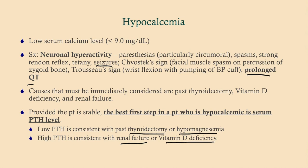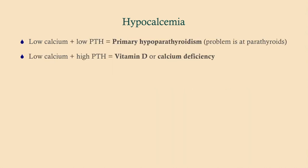Remember that PTH takes 25-hydroxyvitamin D and converts it to 1,25-hydroxyvitamin D — PTH helps that process via 1-alpha-hydroxylase. However, if you're vitamin D deficient, you can have all the PTH and functional 1-alpha-hydroxylase in the world and it won't help. You'll just keep making PTH because you've lost the negative feedback. So: low calcium with low PTH — think primary hypoparathyroidism with a history of thyroidectomy. Low calcium with high PTH — think vitamin D or calcium deficiency, usually secondary to malabsorption.